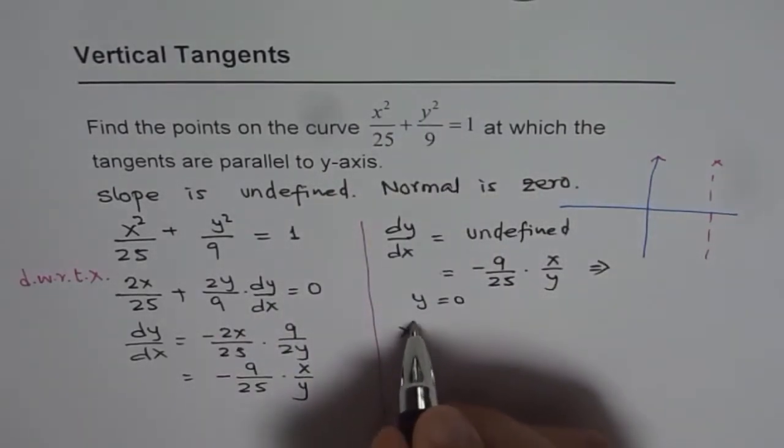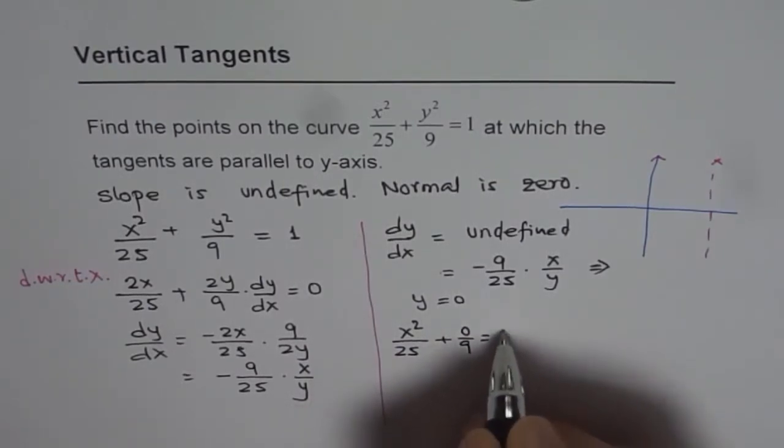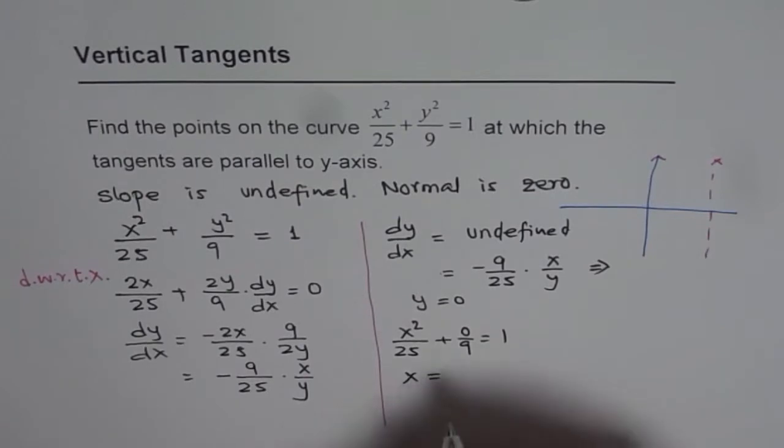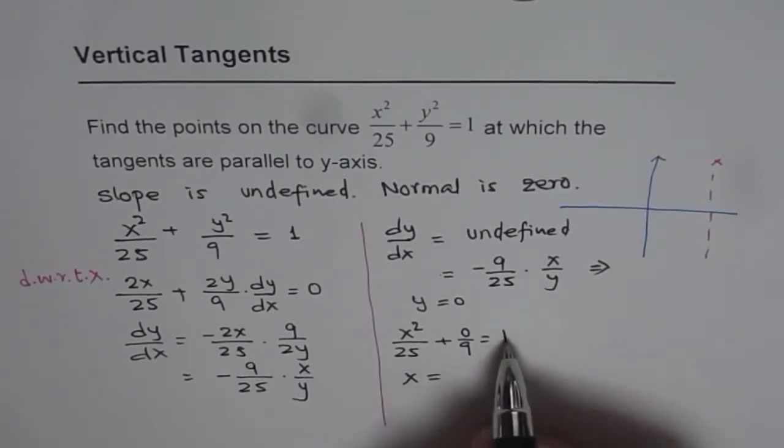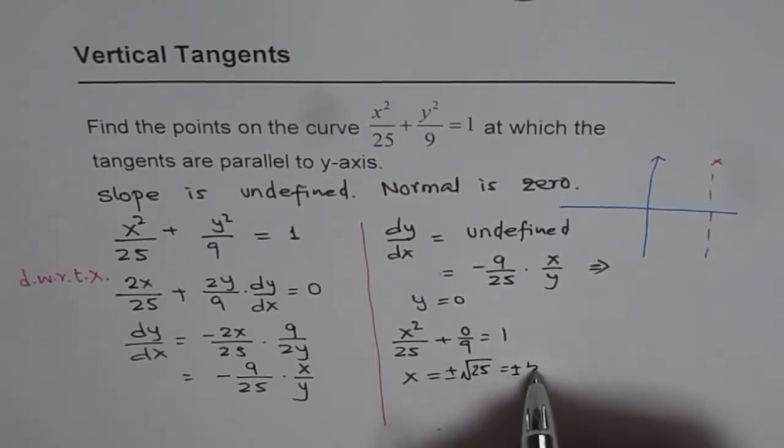So we get x squared over 25 plus 0 over 9 equals 1. So this is 0, 25 times 1 square root. So we get plus and minus square root of 25, and that is plus and minus 5.